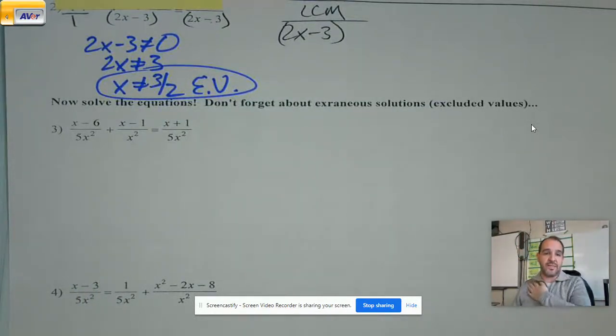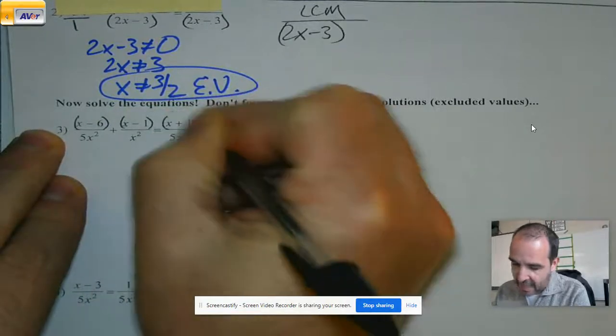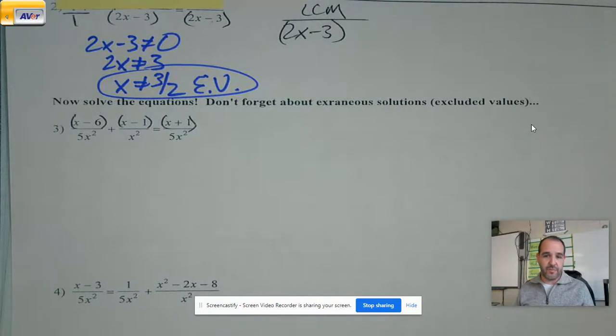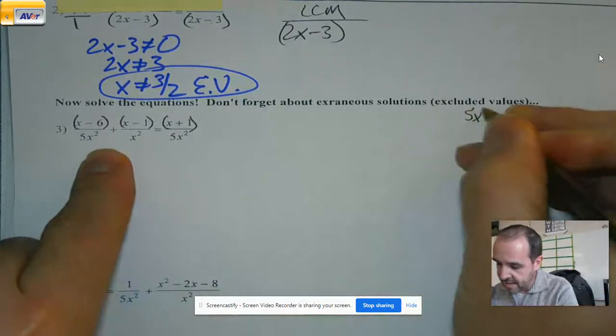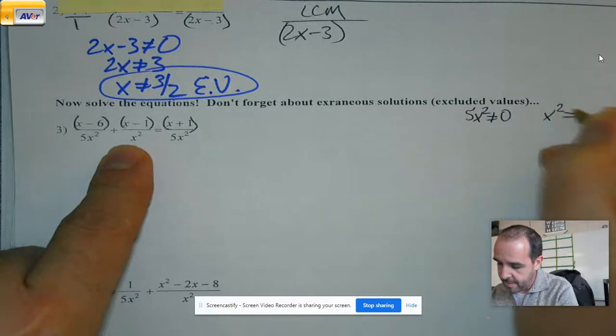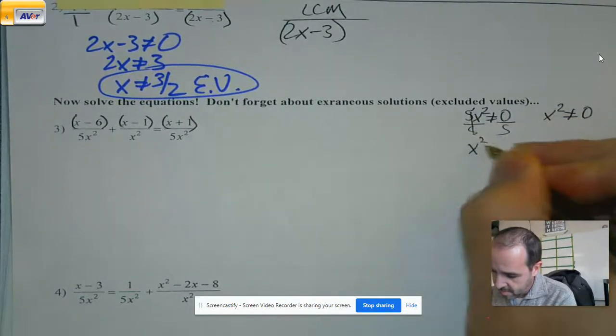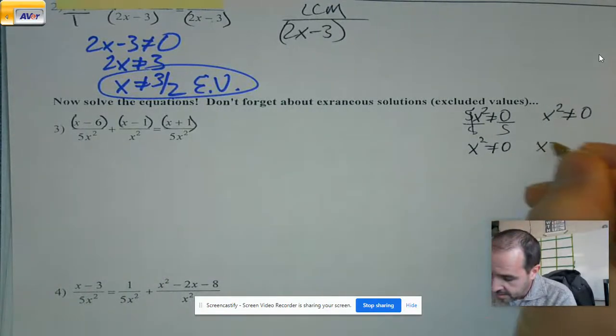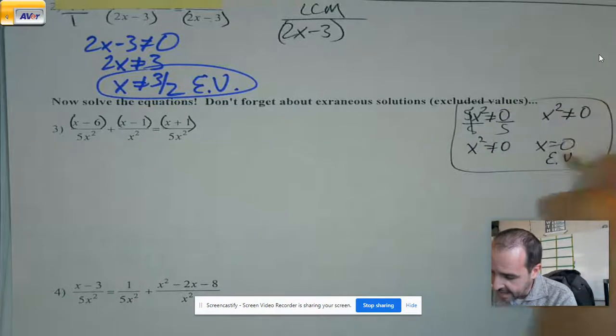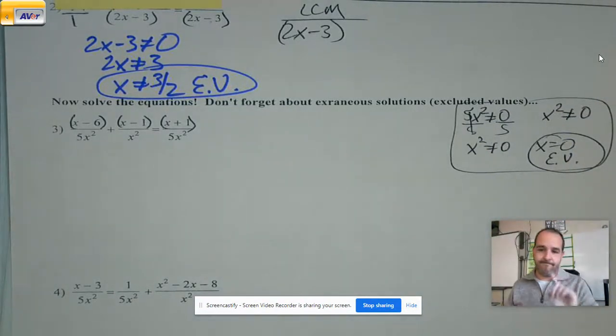Solve the equations. Don't forget about the extraneous solutions. Now, here's the thing from me. Before I start these problems, I always like to look at my denominators and see what the extraneous values are going to be. Because if I know what they are, the likelihood that I'm going to forget at the end is great. At the beginning, not so much. So I look at these and I say, 5x squared can't be zero, and x squared can't be zero. So if I do a little quick math, what can I square and get zero? Oh, zero. So what does that mean? It just means right at the beginning, I know if I get zero as an answer, I can't use that.